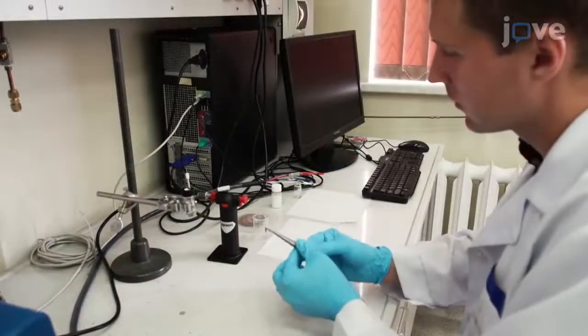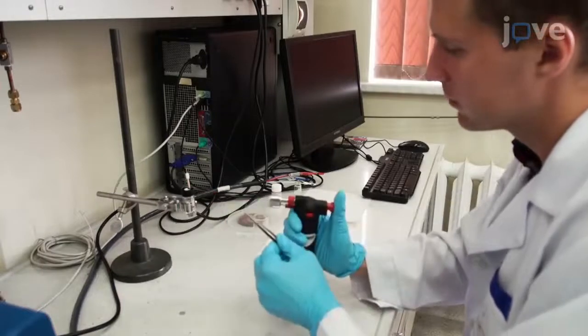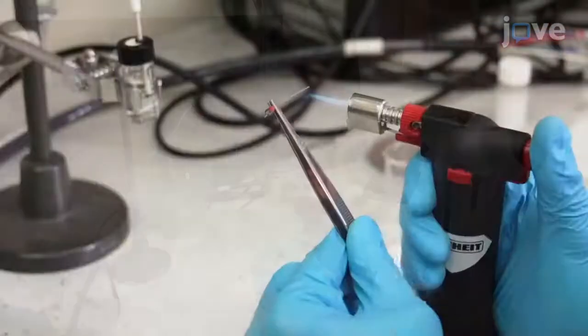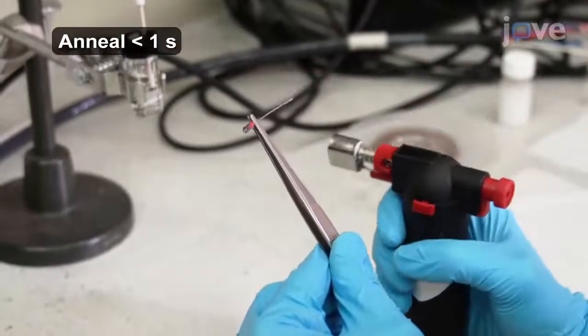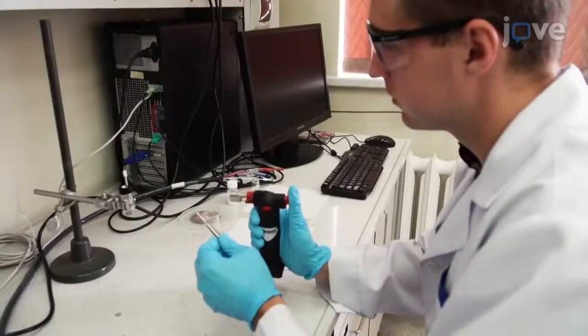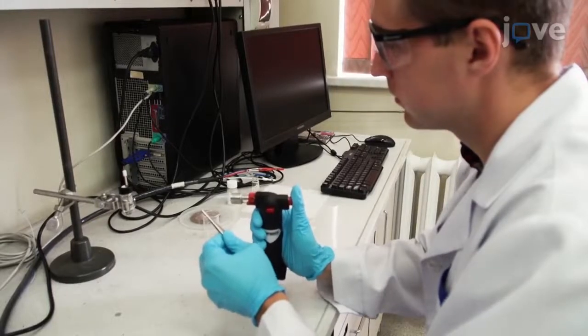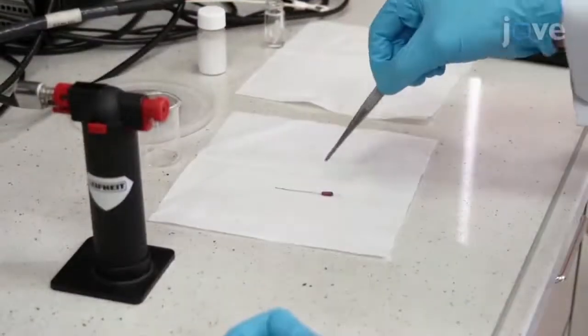Next, obtain a platinum wire counter electrode and ignite a butane torch. Anneal the electrode by carefully holding it in the flame just until it starts reddening. Anneal a silver wire reference electrode in the same way and allow both electrodes to cool.